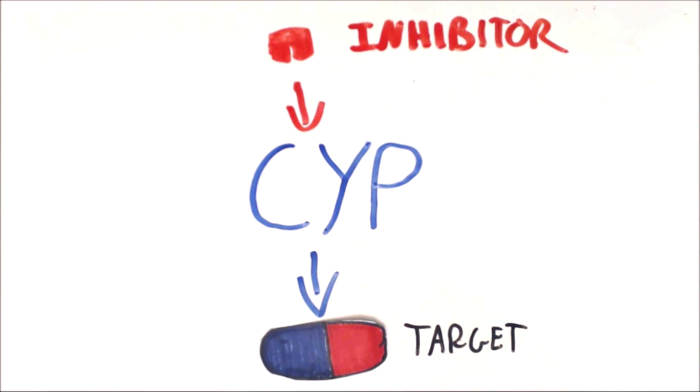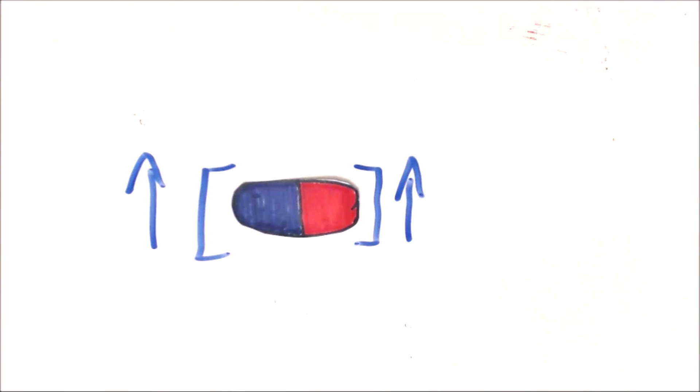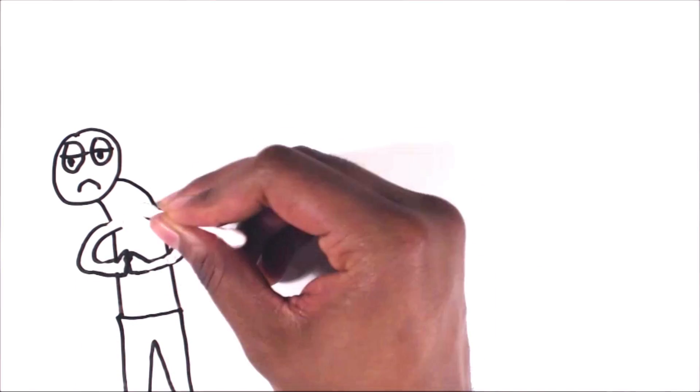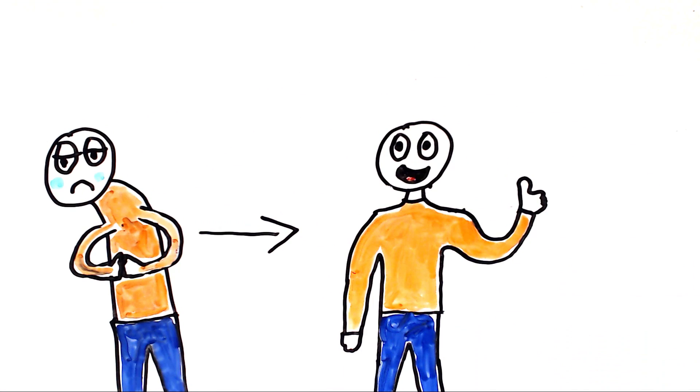The inhibitor reduces the CYP's metabolism of the target drug. This means that there's a higher concentration of the target drug in the body.